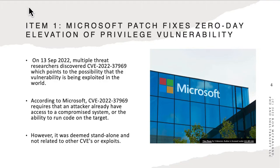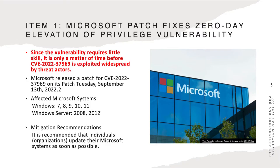According to Microsoft, CVE-2022-37969 requires that an attacker already have access to a compromised system or the ability to run code on the target system — so they already have to be within the system. It was deemed standalone and not related to other CVEs or exploits. Since this vulnerability requires some skill, researchers have noted it is only a matter of time before it's exploited widely. Microsoft released a patch on September 13th, 2022. Affected systems include Windows 7, 8, 10, 11, and Windows Server 2008 and 2012 — a pretty broad scope. It's recommended that individuals and organizations update their Microsoft systems as soon as possible.